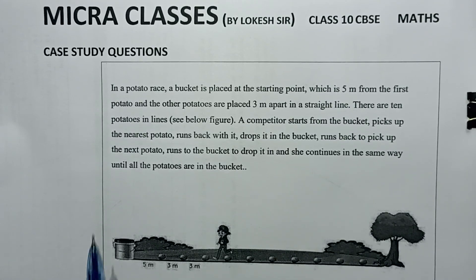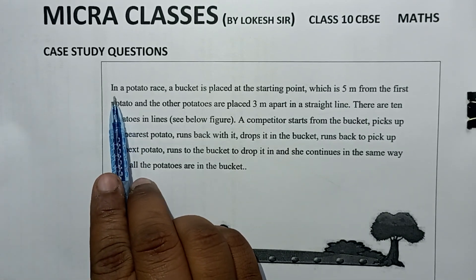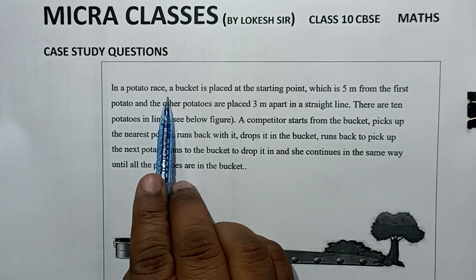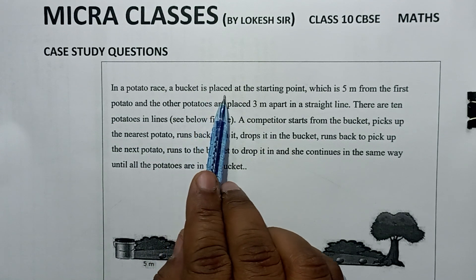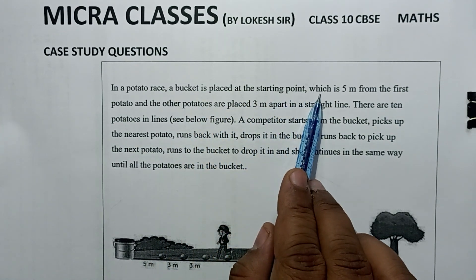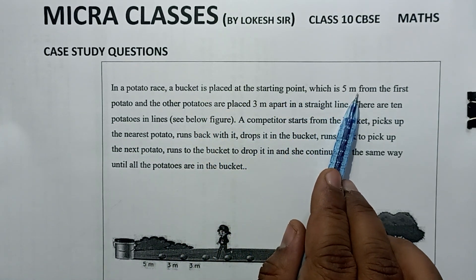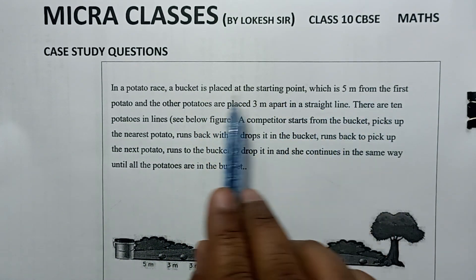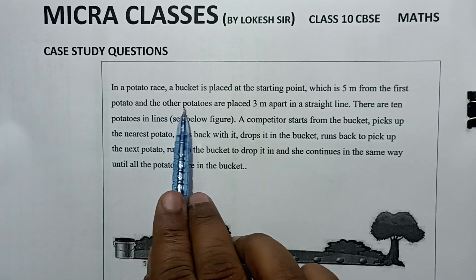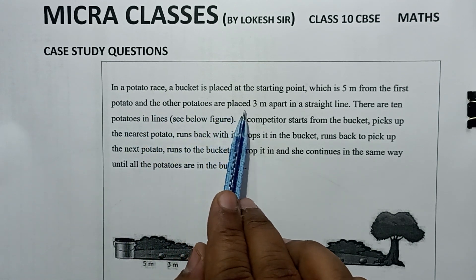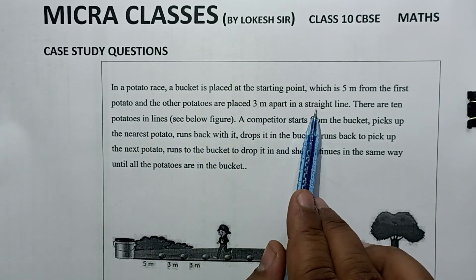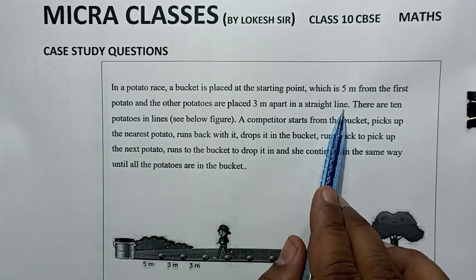Our next case study is: in a potato race, a bucket is placed at a starting point, which is 5 meters from the first potato, and the other potatoes are placed 3 meters apart in a straight line.